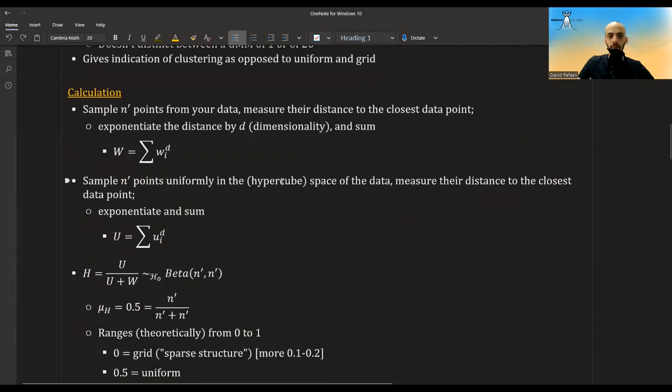Now, let's talk about how you calculate the Hopkins statistic. You need to calculate two different quantities. The first is you sample some number of points N' points from your data and measure their distance to the closest data point. Then you take that distance and take it to the power of D, where D is the dimension of your data. So if your dimension is two, you take W to the power of two. But if you have higher dimension data, you will take it to a higher dimension. And then you sum all of this up and we'll call this W.